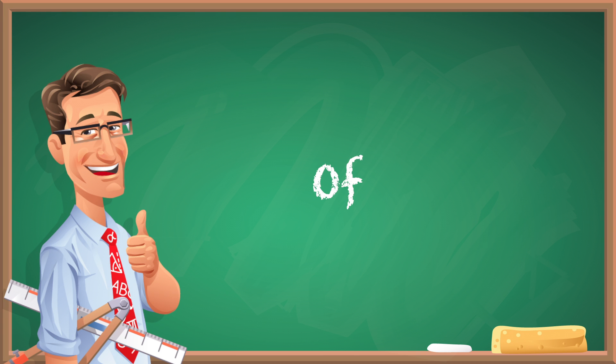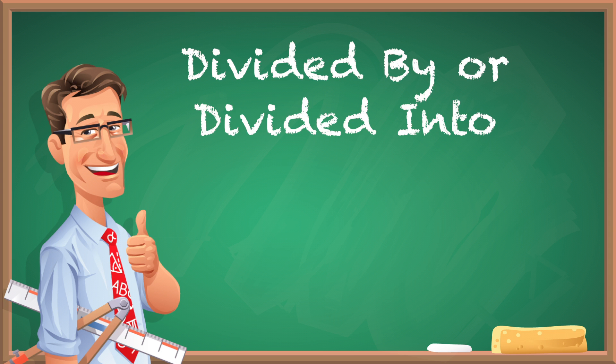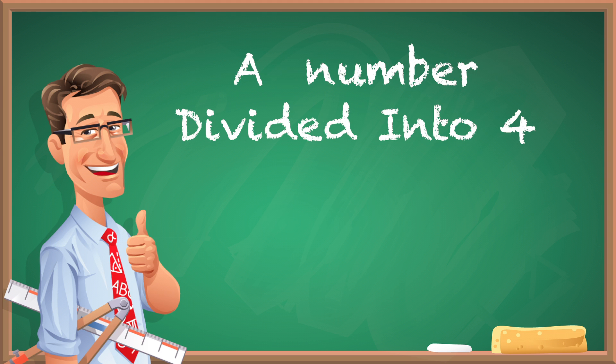If you see the phrase 'divided by' or 'divided into,' you're going to be dividing. So if you see 'a number divided into four,' you have that number—let's call it x—divided by 4, or x ÷ 4.